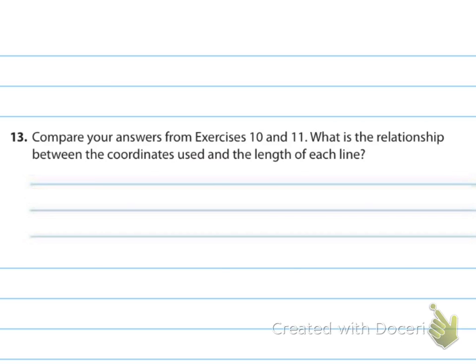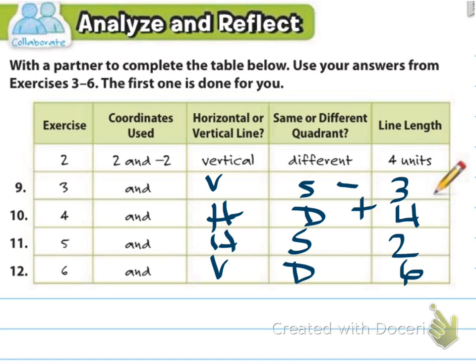Number thirteen says to compare your answers from exercises ten and eleven: what is the relationship between the coordinates and the length of each line? Both are horizontal, but in exercise four you had different quadrants so you added, while in eleven the points were in the same quadrant so you subtracted.